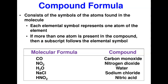Compounds consist of pure substances made up of two or more elements or atoms that are chemically combined together. Each compound is represented by symbols of its elements. Each symbol represents one atom of that element. If you have more than one atom of an element, you use a subscript — not a superscript — to represent that number. A subscript is written below and to the right of the element symbol.